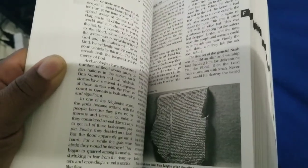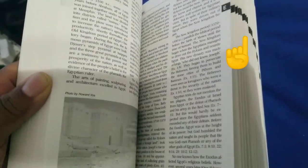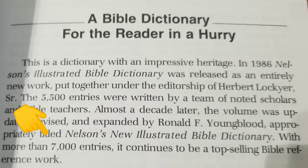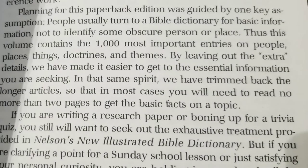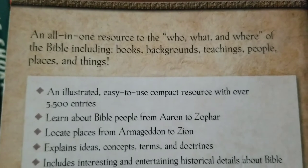There are photographs as well as sketches of different concepts being explained from the Bible, and it is in alphabetical order noted by the tabs that you can see on the side of the pages. This Bible Dictionary is a paperback and it boasts having 7,000 entries. It says that it is for the reader in a hurry, because when people are turning to a Bible Dictionary it's usually for basic information, not to identify obscure people or places.